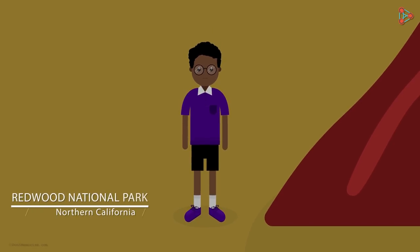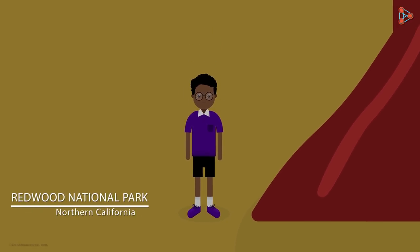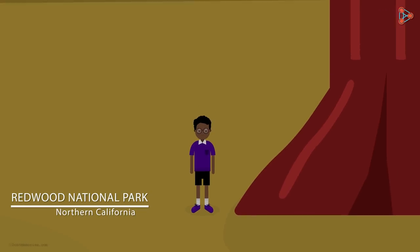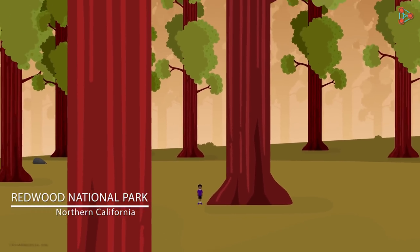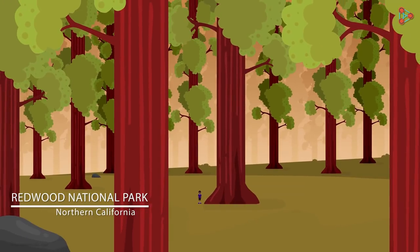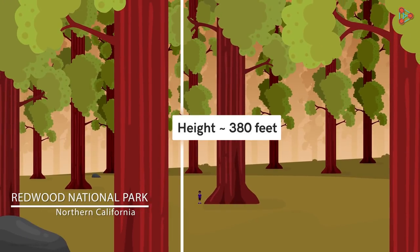As we take a tour of the Redwood National Park in Northern California, we are bound to be awestruck by a mere glance of the giant redwood trees. Their height of over 380 feet makes them the world's tallest trees. But ever wondered how they maintain the uniformity?